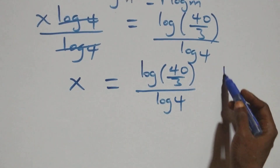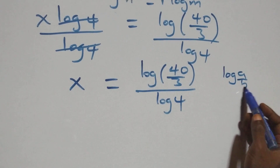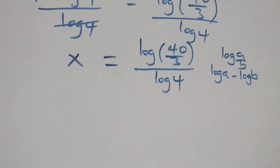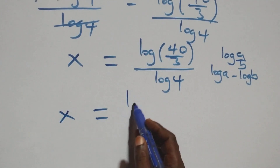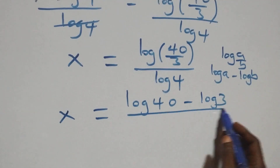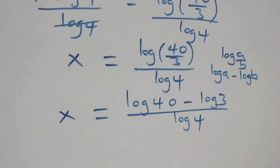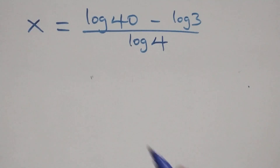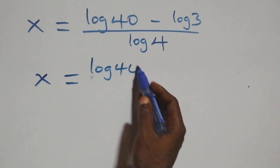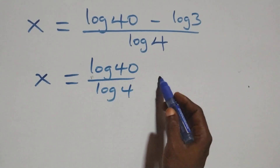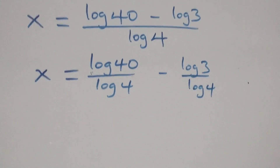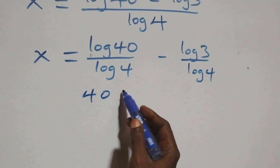This follows the logarithm law: log(a/b) is the same as log a minus log b. So x equals log 40 minus log 3, all divided by log 4. We can also write 40 as 4 times 10.